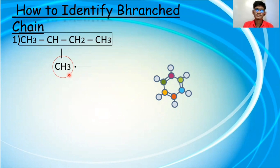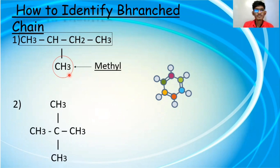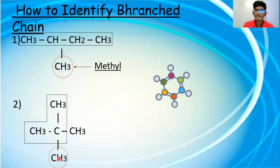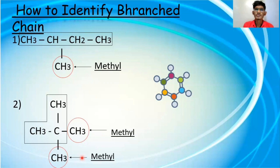Moving to the next question. Let us count the terminal points: one, two, three, four. But wait — this one is a midpoint, so there are only four terminal points. For me, this is the longest carbon chain, and these are my two methyl branches attached to it. Both branches are methyl groups.